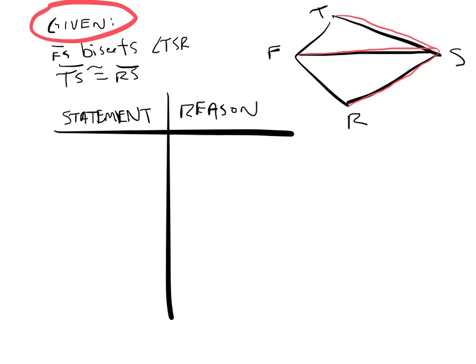That bisects that, and also they told us that this line is congruent to this line. I started to point at it, but you guys can't see my hand. All you see is the thing. So there's that.